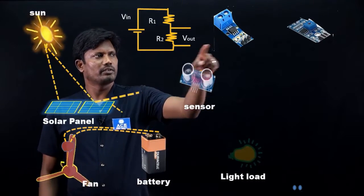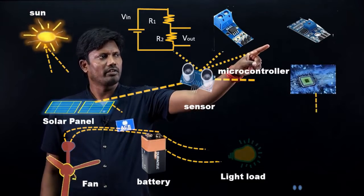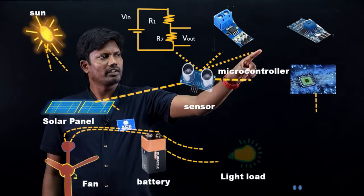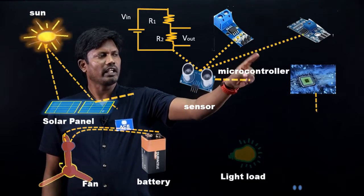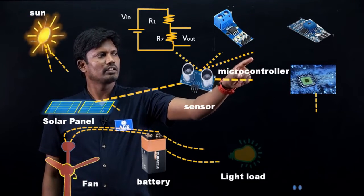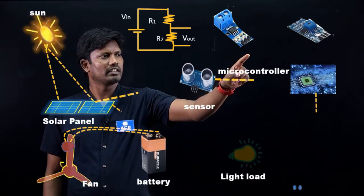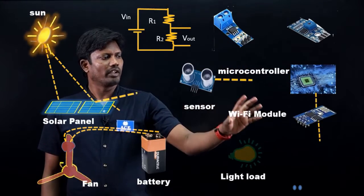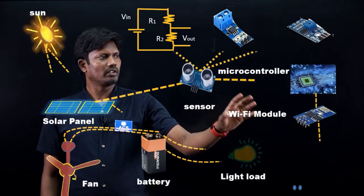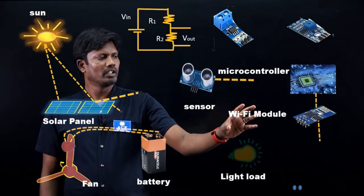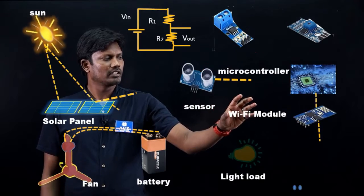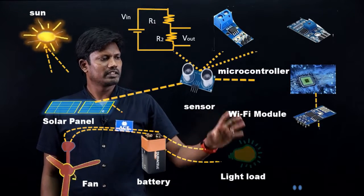The microcontroller converts these analog signals to digital signals and sends them to the wi-fi module. The wi-fi module then uploads these digital signals to the server.